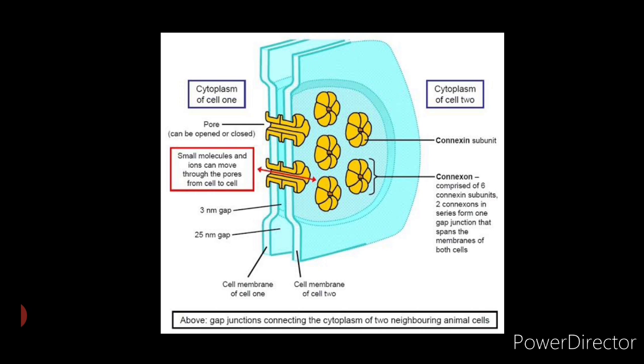Gap junctions can put a large number of cells of a tissue into intimate cytoplasmic contact. This has important physiologic consequences because a number of highly active regulatory substances such as cyclic AMP and inositol phosphates are small enough to fit in gap junction channels.